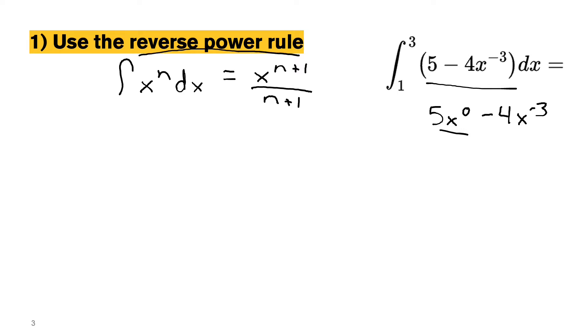And then moving back over to the left and applying the power rule, we'll get 5 times x to the 0 plus 1, which is just 1 over 1, minus negative 4 times x to the negative 3 plus 1, which is negative 2, divided by negative 2. And then we can simplify that a little bit more. So 5x plus 2 times x to the negative 2. And then also make sure to write down your bounds.